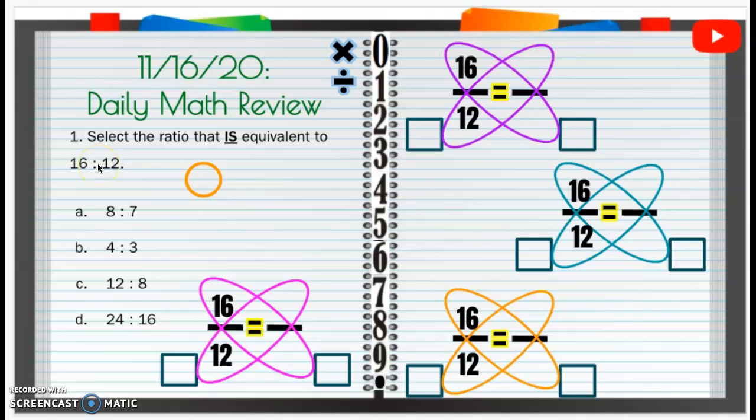All right, so we have A, B, C, and D here. So we're going to figure out which ratio is equivalent or equal to. So not is not, but is. So what I'm going to do is set up each of my little butterfly ways.